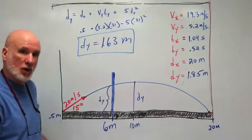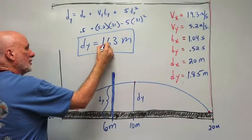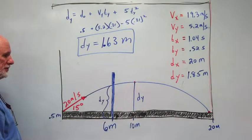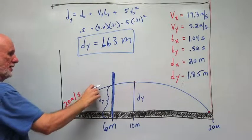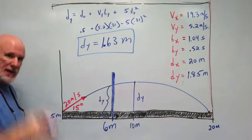So the answer, how far up the wall will it hit? 1.63 meters. It hits it on the way up. Easy? Thank you.